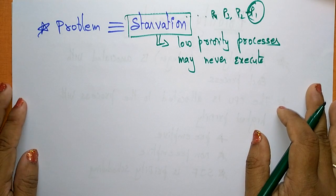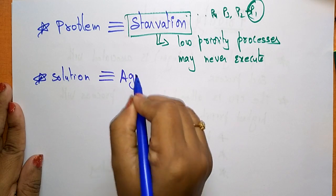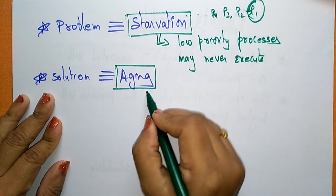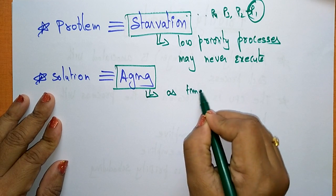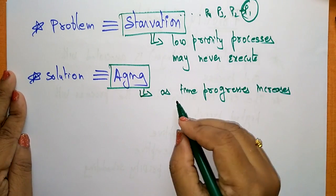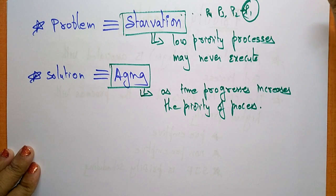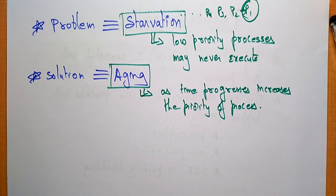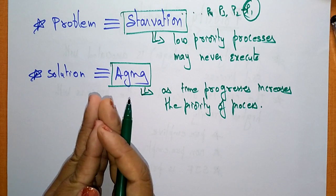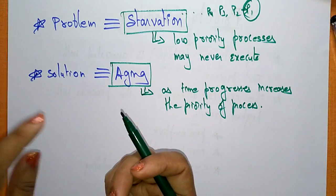There is a solution to the starvation problem, and that solution is called aging. Aging means that as time progresses, you increase the priority of the waiting process. By assigning a time limit, the low priority process will eventually get a chance to execute — even if higher priority requests keep coming. That is aging, and it is the solution for starvation.